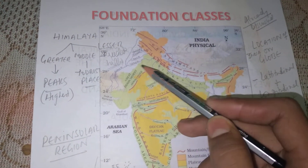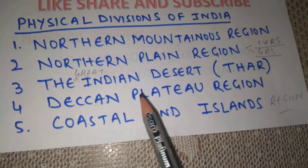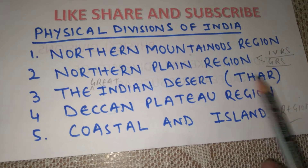Our third point is the Indian Desert — the Thar Desert, also known as the Great Indian Desert.